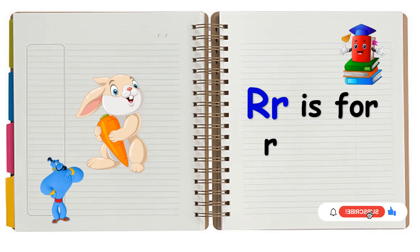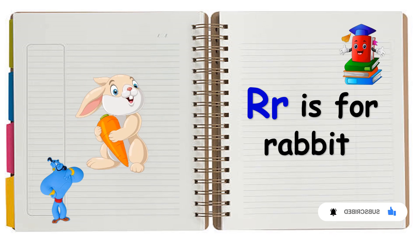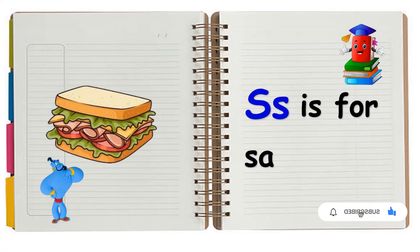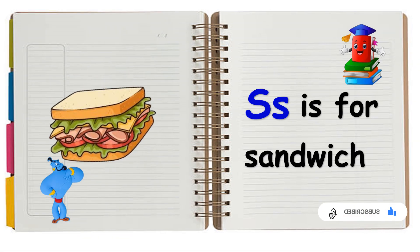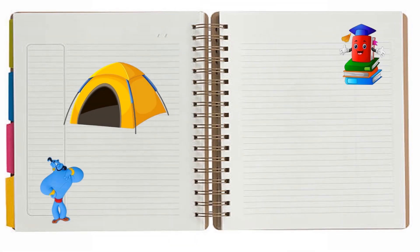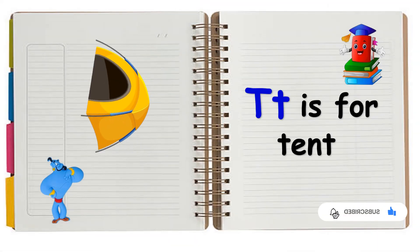R is for Robin. R, R, Robin. S is for Sandwich. S, Sandwich. T is for Tent. T, T, Tent.